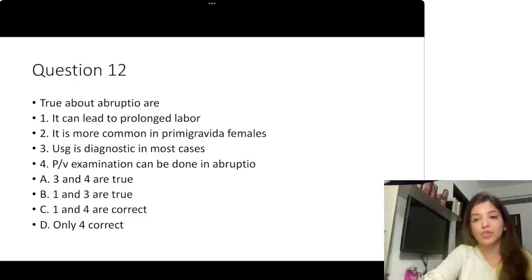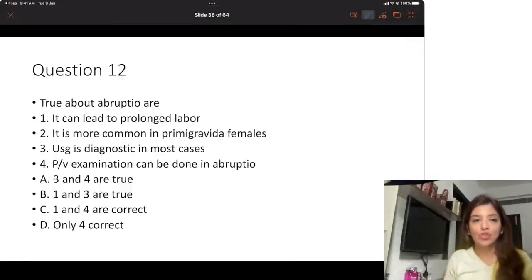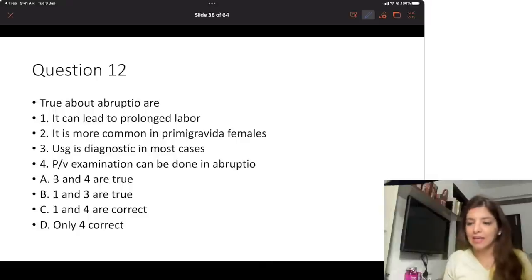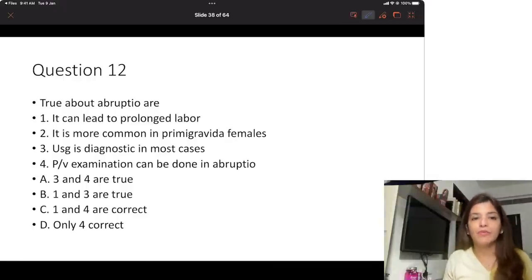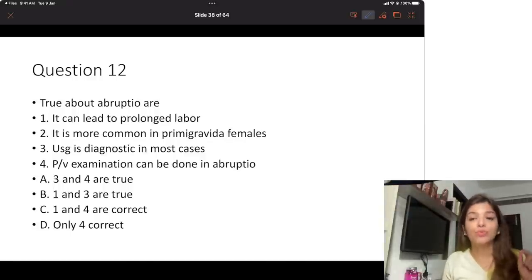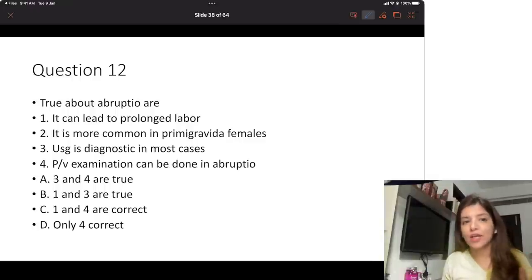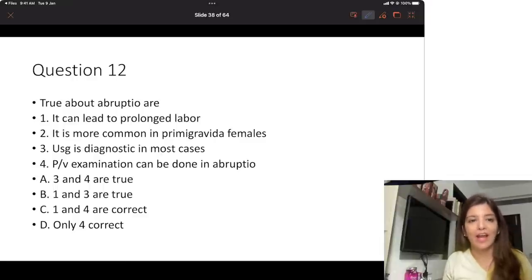The first question is number 12. The question asks what is true about abruptio. Option 1: it can lead to prolonged labour. Option 2: it is more common in primigravida females. Option 3: ultrasound is diagnostic in most cases. Option 4: per vaginal examination can be done in abruptio. Options are: A says 3 and 4 are true, B says 1 and 3 are true, C says 1 and 4 are true, D says only 4 is true.